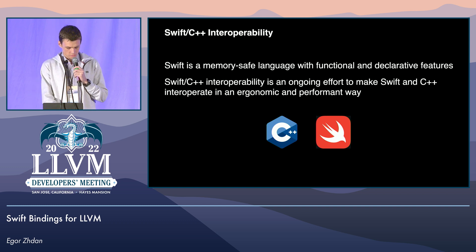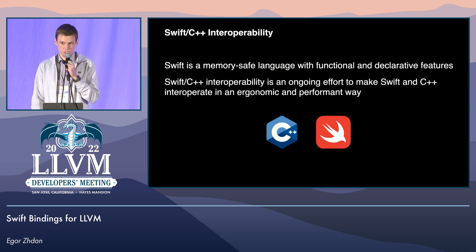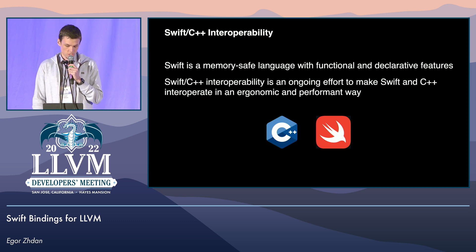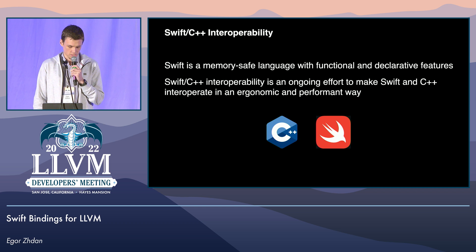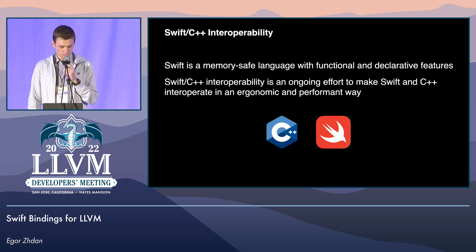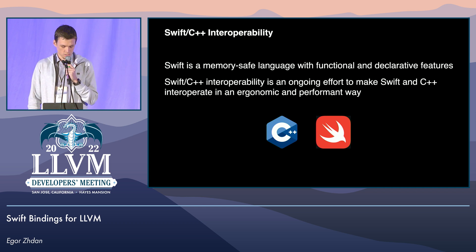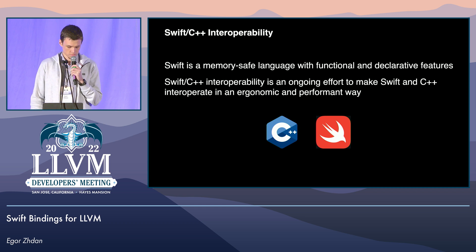Swift is a language that strives to be safe by default and has a mix of functional and declarative features. Swift already provides interoperability with C and Objective-C. And in the past year, we have been making an ongoing effort to allow Swift code to seamlessly interoperate with C++ code while putting a focus on safety, performance, and ergonomics.